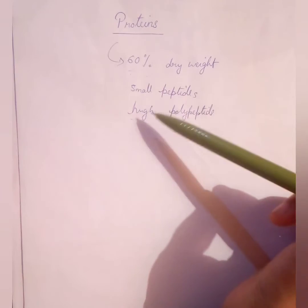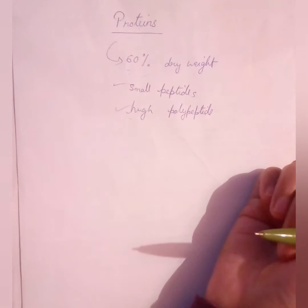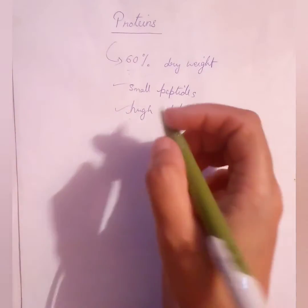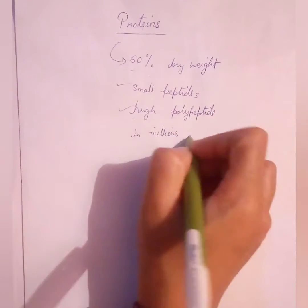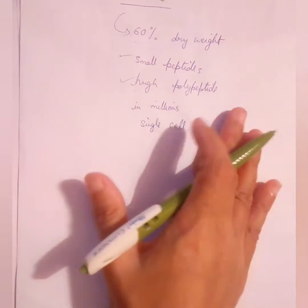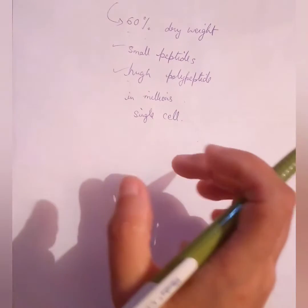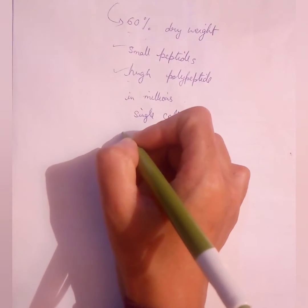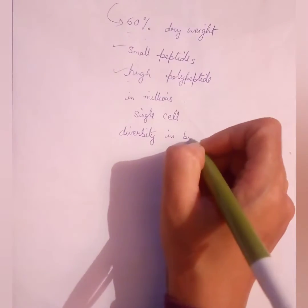Proteins not only occur in great varieties but also range in size from just small polypeptides to huge polypeptides. We see that they are the most abundant biological macromolecules, and they also exhibit enormous diversity in biological functions.